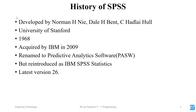SPSS was developed at Stanford University in the year 1968. Later it was acquired by IBM in 2009 and renamed to Predictive Analytics Software, but later its name was reintroduced as IBM SPSS Statistics. The latest version of SPSS is 26.